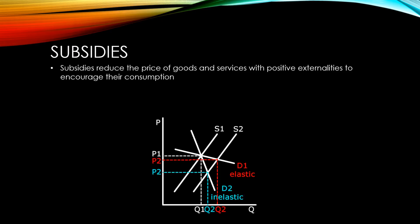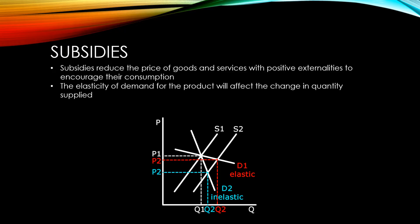Subsidies reduce the price of goods and services with positive externalities to encourage their consumption. The elasticity of demand for a product will greatly affect the change in quantity consumed. When we give subsidies to industries with elastic demand, there will be a much bigger change in consumption than to those with inelastic demand.